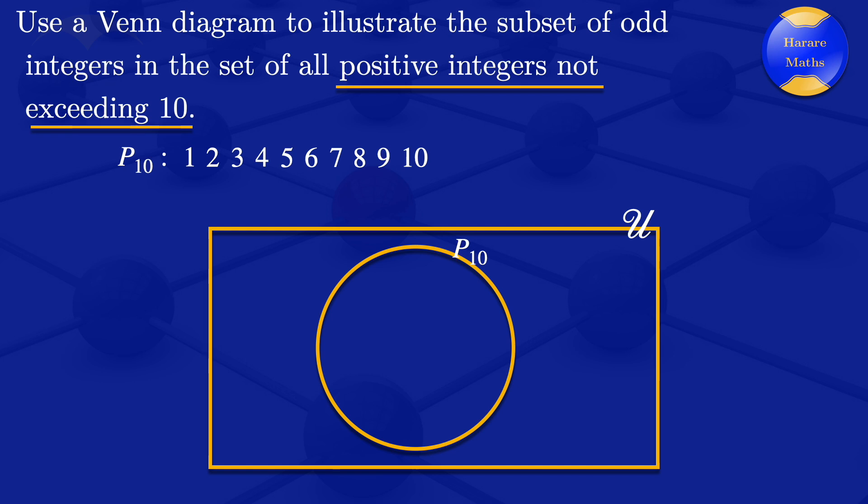And inside this set of positive integers not exceeding 10, we have another set and I'll represent it by a circle. So it's inside this set. So that's the set of odd integers and I'll call it P0.